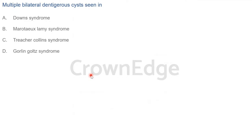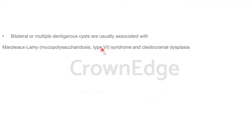Many students think of Gorlin-Goltz syndrome for bilateral dentigerous cysts, but that is actually associated with OKC. The answer is Maroteaux-Lamy syndrome — that is mucopolysaccharidosis type 6. Bilateral dentigerous cysts are very rare and are seen in two conditions: Maroteaux-Lamy syndrome and cleidocranial dysplasia. Go back and read about Gorlin-Goltz syndrome and OKC.